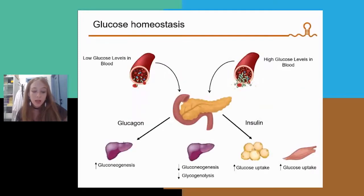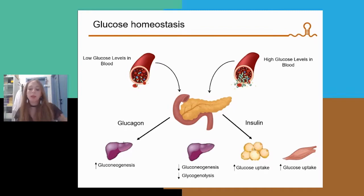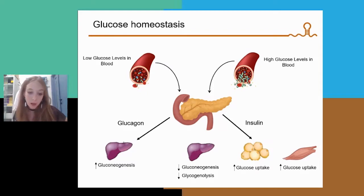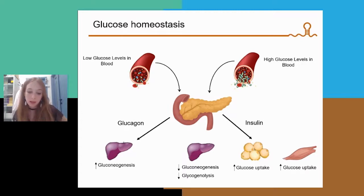First, I'm going to do a brief introduction about diabetes. Glucose homeostasis is regulated by hormones secreted by the pancreas. When circulating glucose levels are low, the pancreas increases glucagon in order to promote gluconeogenesis in the liver. In contrast, when glucose levels in the blood are high, the pancreas secretes insulin to stop gluconeogenesis in the liver and promote glucose uptake in the adipose tissue and skeletal muscle.